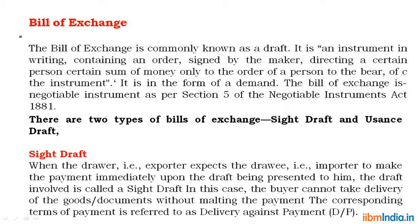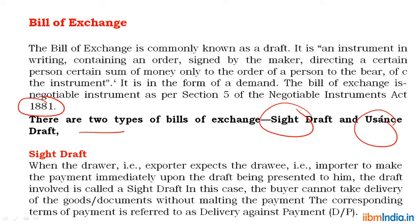The next document is the bill of exchange, commonly known as a draft. It is an instrument in writing containing an order signed by the maker directing a certain person to pay a certain sum of money to the order of a person or to the bearer of the instrument. It is in the form of a demand. The bill of exchange is a negotiable instrument as per Section 5 of the Negotiable Instruments Act.